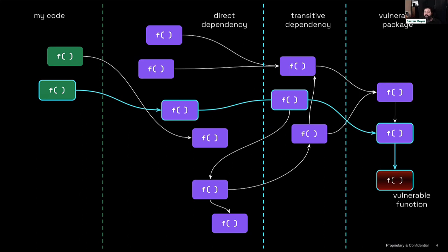As a practitioner, I've always been bothered by the approach of 'just fix criticals and highs.' I know for a fact that if I fix all the criticals and highs, I will have wasted some time fixing stuff where there was actually no risk — because if the path didn't exist, there's no possible way to exploit the vulnerability. And there are probably some mediums and lows that I'm actually really worried about that I'd rather be spending that time on. Having context about what things matter, irrespective of severity label, is key. I want to know where I need to spend my time — I don't want to eliminate real risk just because it has a medium label.